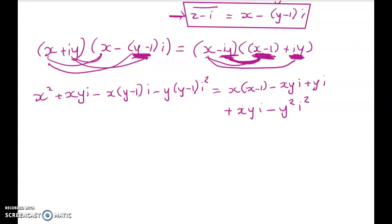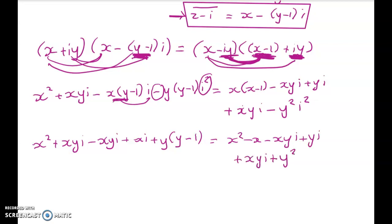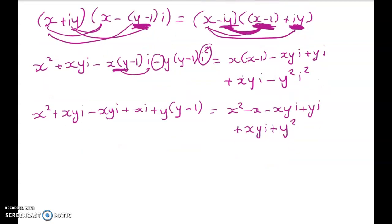Let's just keep on going with the expanding bits. We've got x squared plus xyi minus xyi, that's from here, plus xi, minus, so here we've got minus i squared, so that's plus y minus 1. I'm just pausing because I can hear my dog waking up. Okay, so plus y times (y minus 1). And cleaning up this next side, I get x squared minus x, minus xyi plus yi plus xyi plus y squared, right? What a big mess. But a whole lot of stuff is going to simplify away.